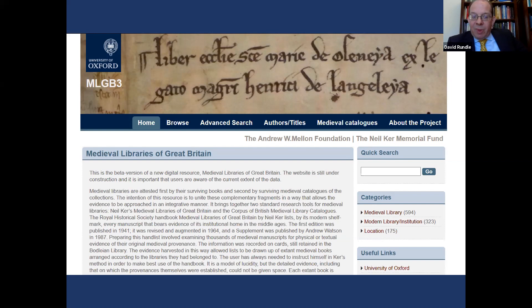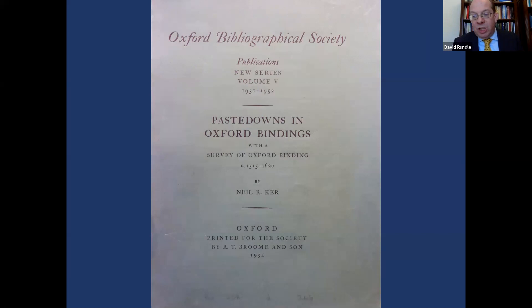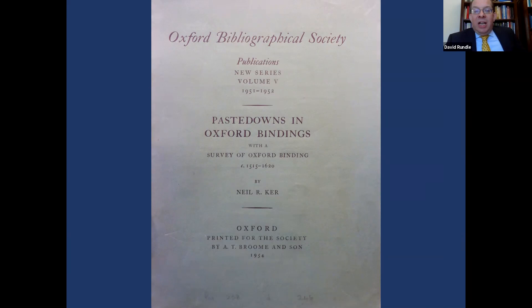The reason I'm speaking today concerns this volume, first published in 1954. The full title is Fragments of Medieval Manuscripts Used as Paste Downs in Oxford Bindings, with a Survey of Oxford Bindings circa 1515 to 1620. One early reviewer, one of Kerr's colleagues at Oxford, called it a 'wonderfully frumpy title.' It is not a book which tries to sell itself, and part of what I want to talk about today is how deep the riches of this book are — riches we haven't really fully understood.